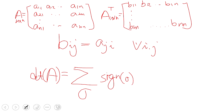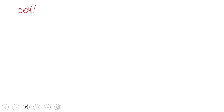We sum over all permutations sigma, first giving a sign of sigma, then multiplying all the terms together from each row: a_{1,sigma(1)} × a_{2,sigma(2)} × ... × a_{n,sigma(n)}. That is the formal definition of the determinant of A.